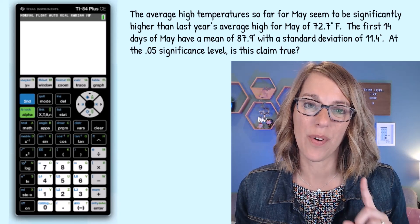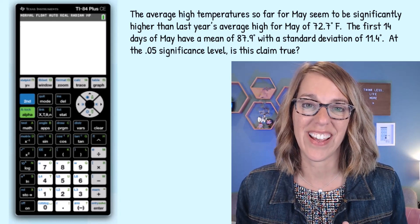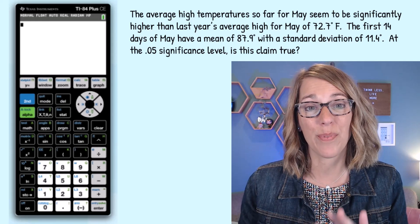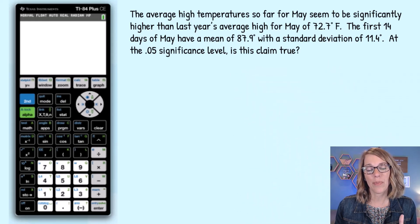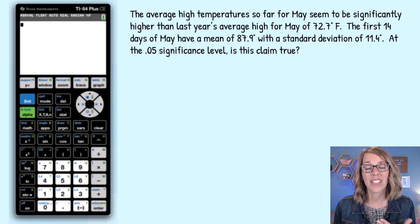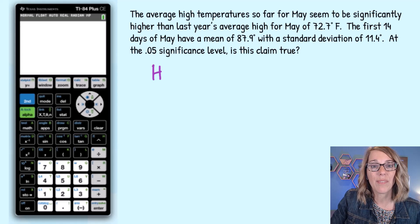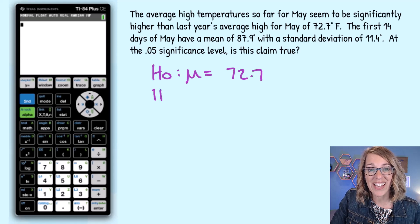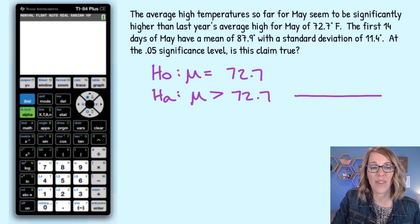Let's conduct a t-test for a single mean using the TI-84 which makes it super easy. In this example we've got average high temperatures for May so far that seem to be significantly higher than the average from last year. This gives me my hypotheses and a one-tail test on the right.